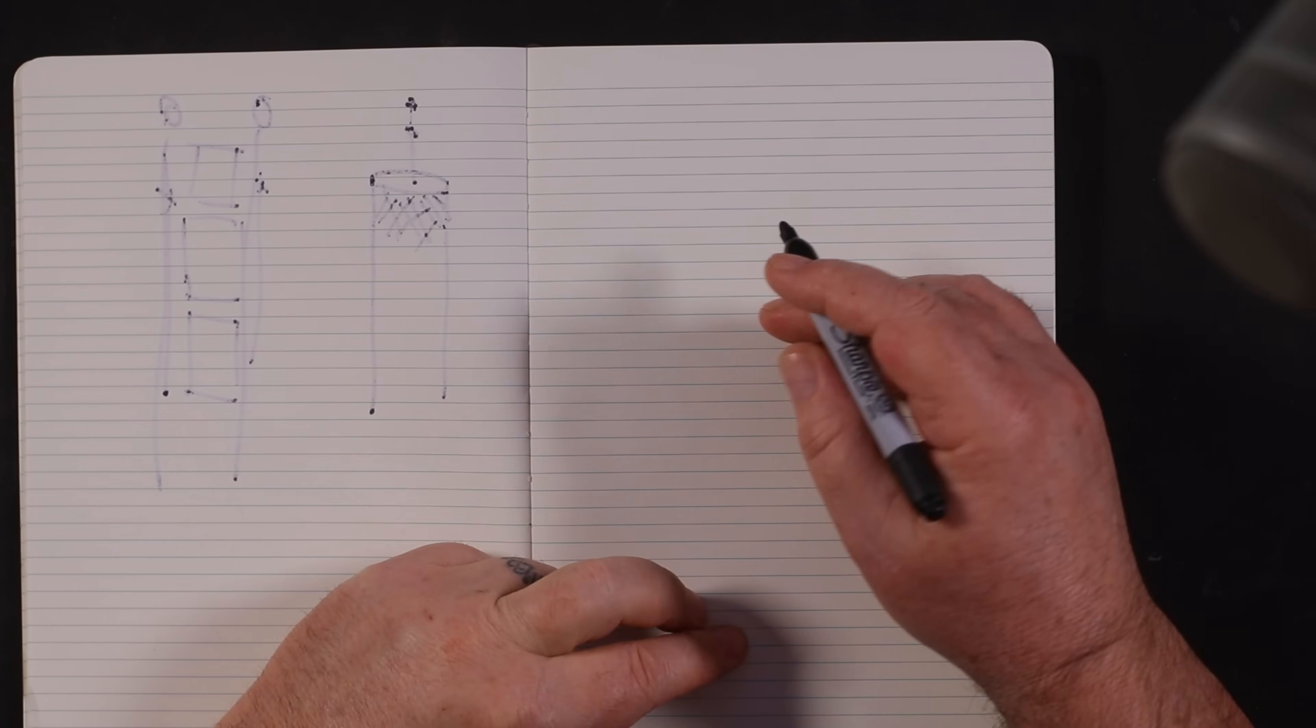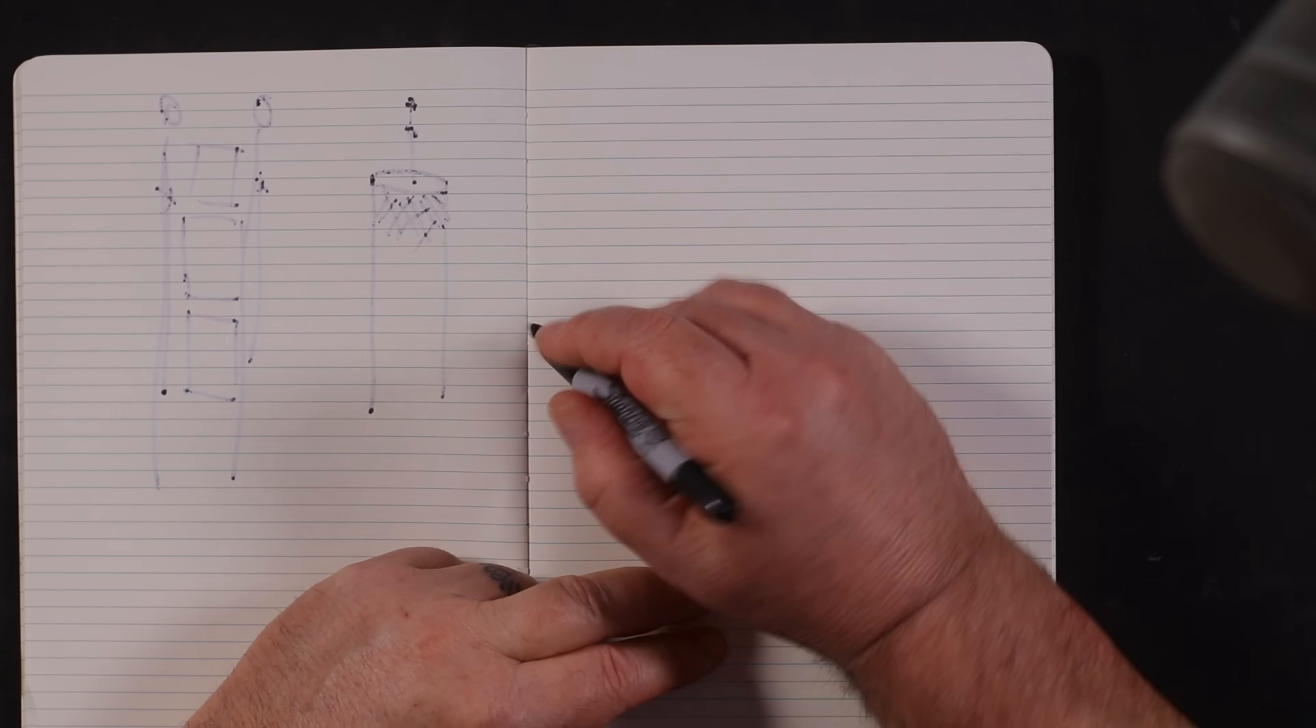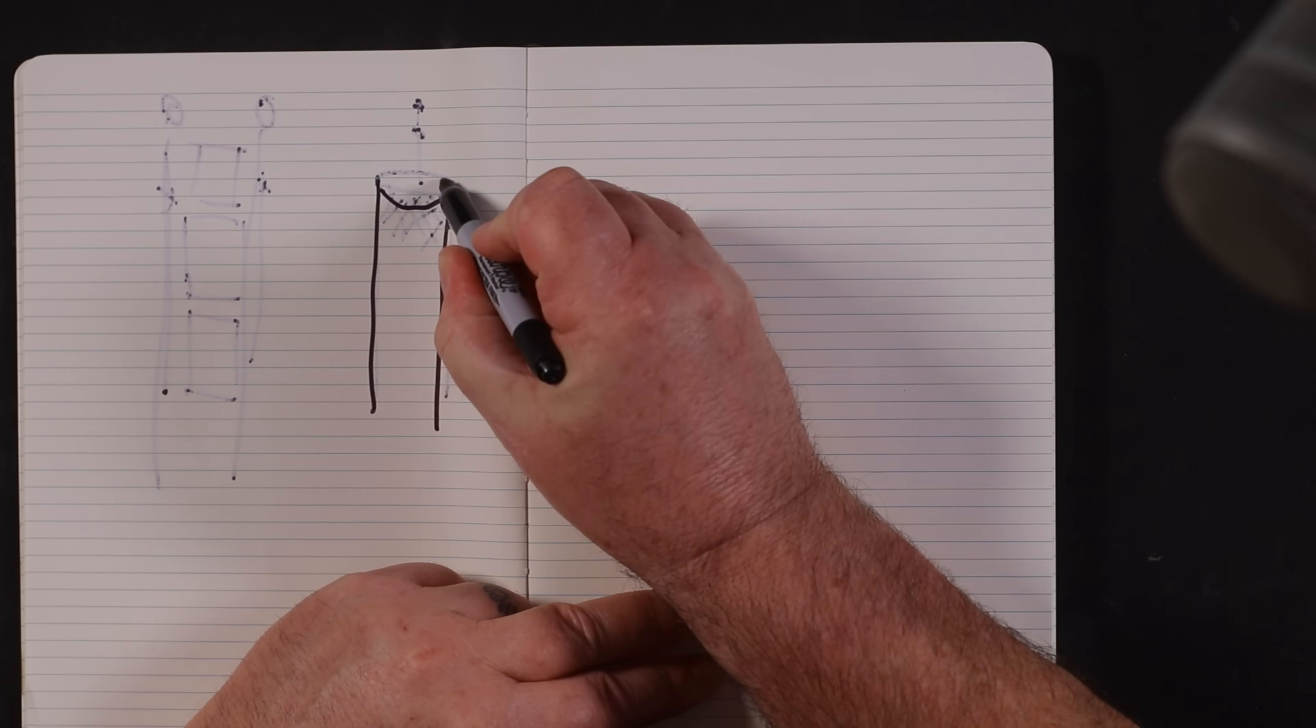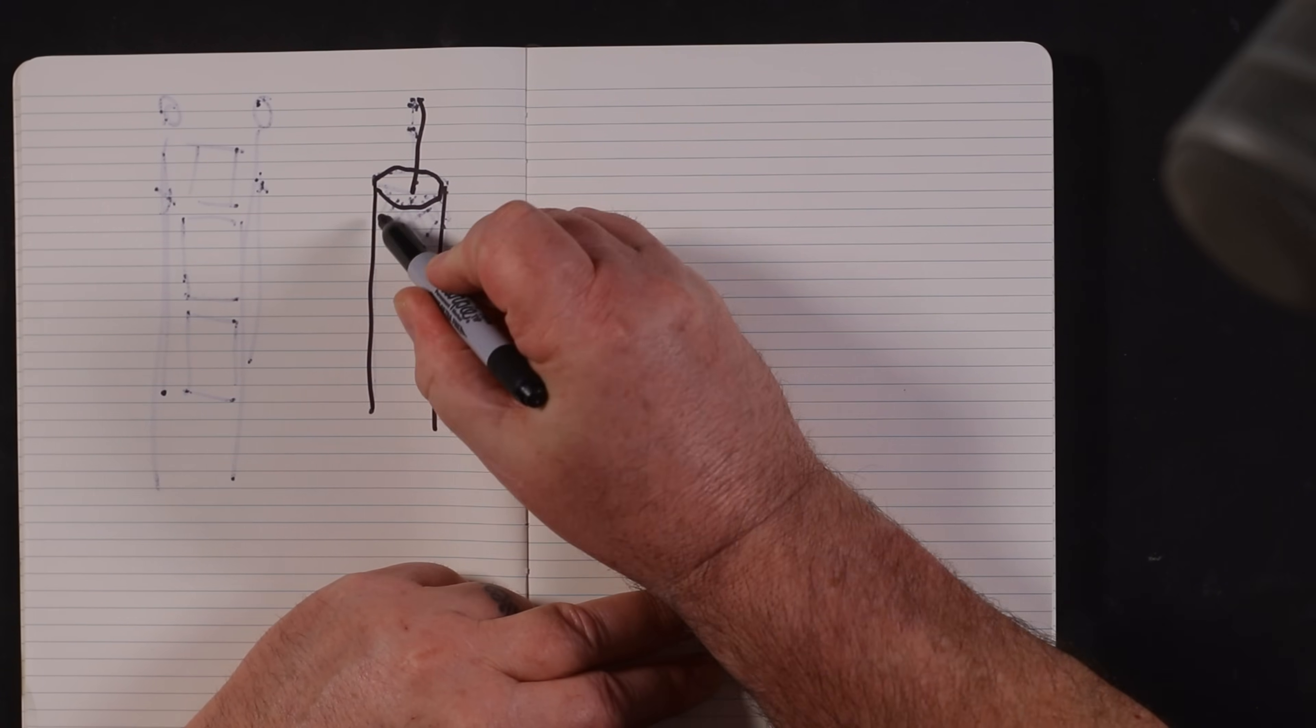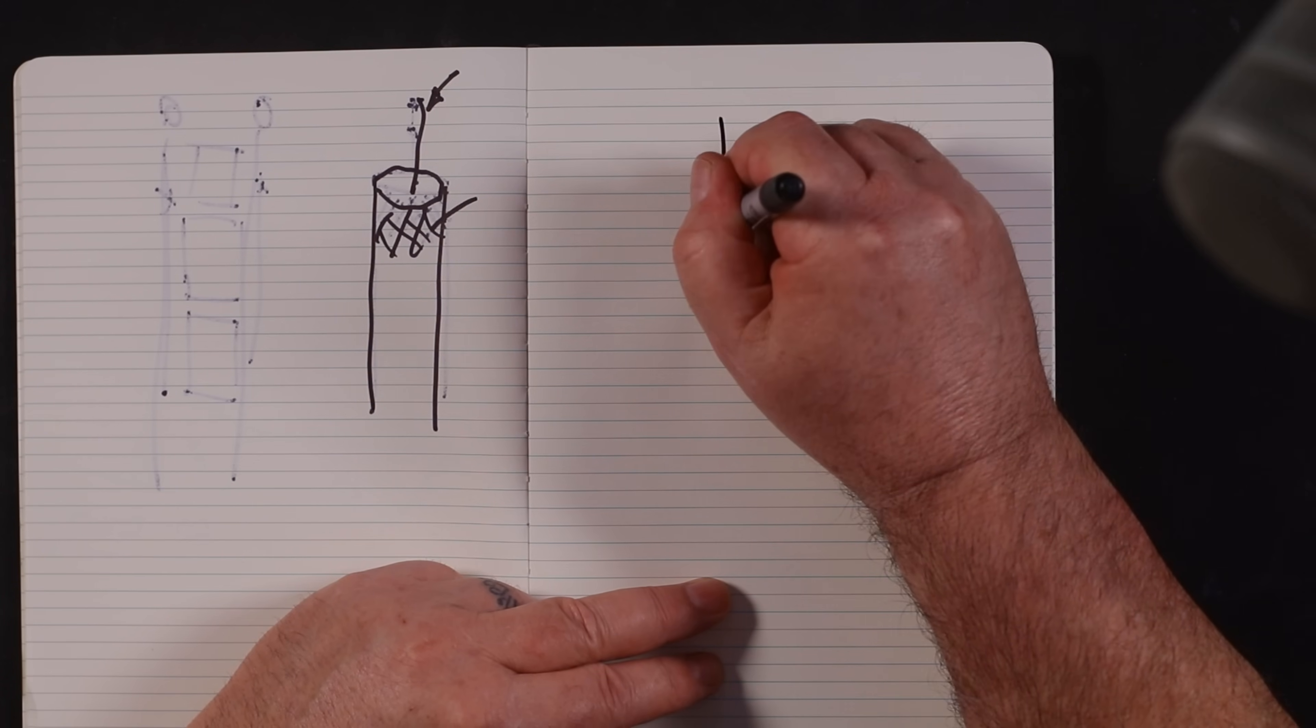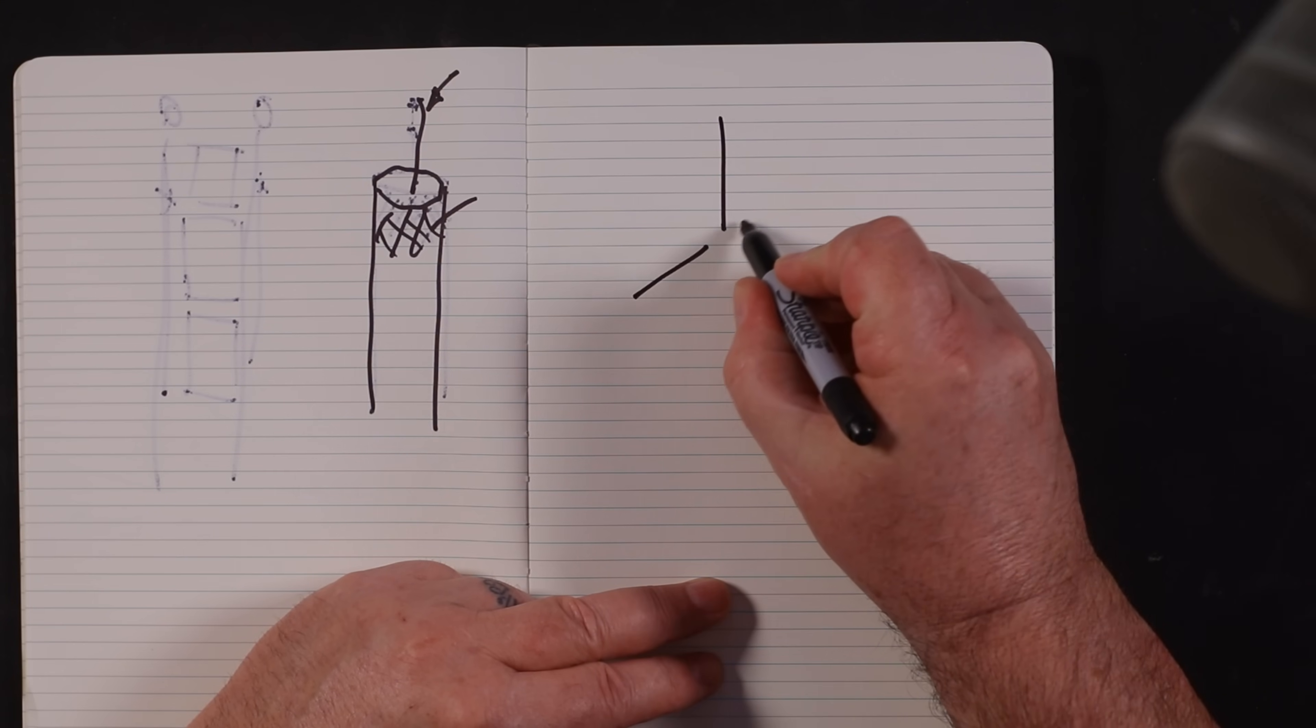We'll start off with a quarter wave ground plane. Now do you remember last time - I might as well fill that in - last time we had the coax and the braid on the outside, so I'll call that the center, I'll call that the braid.